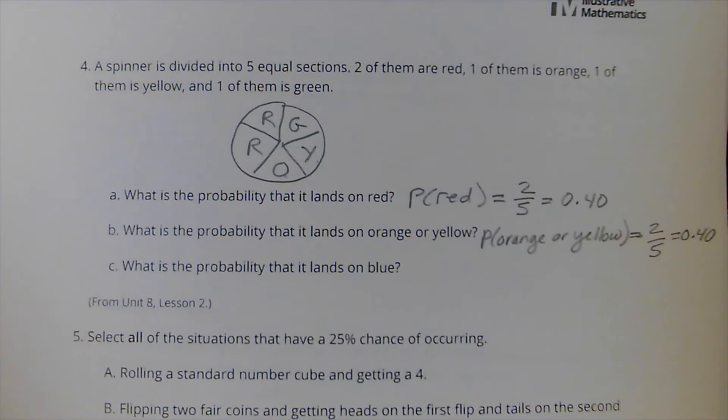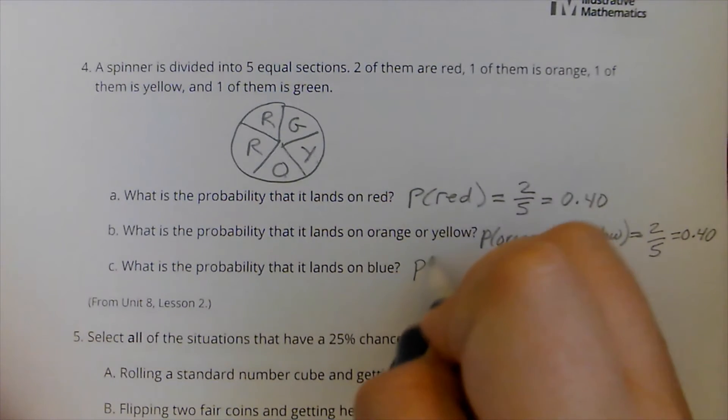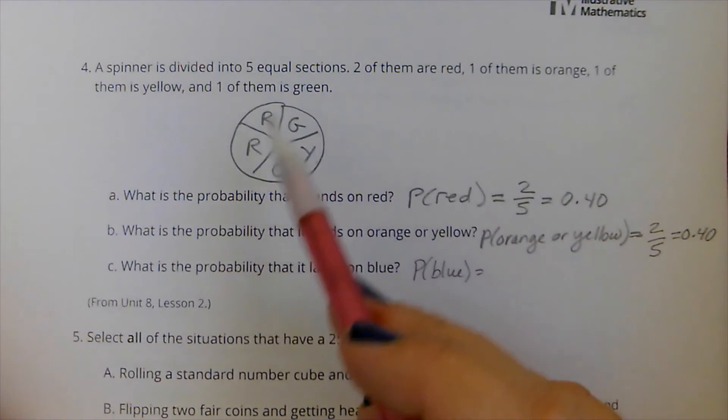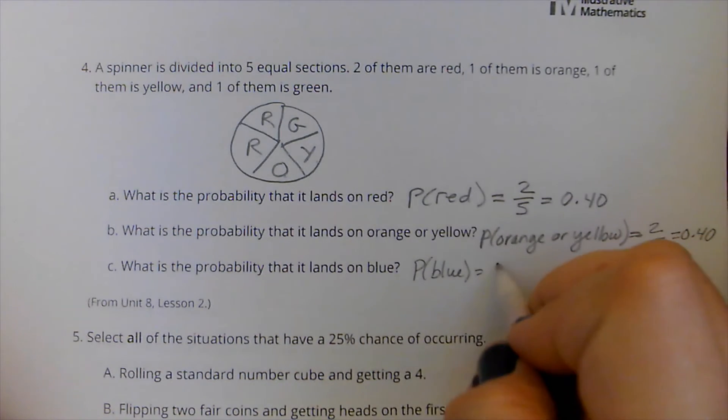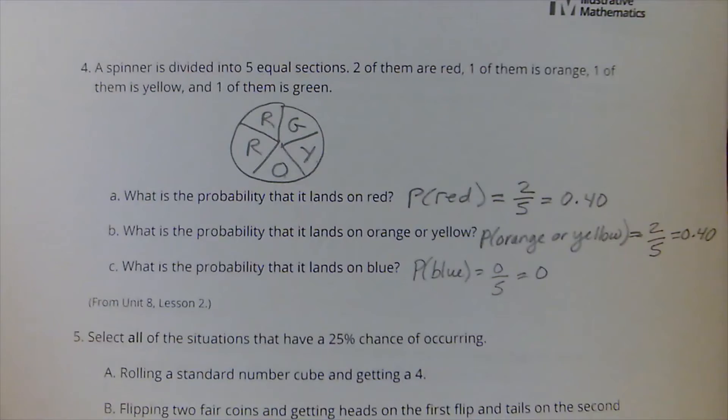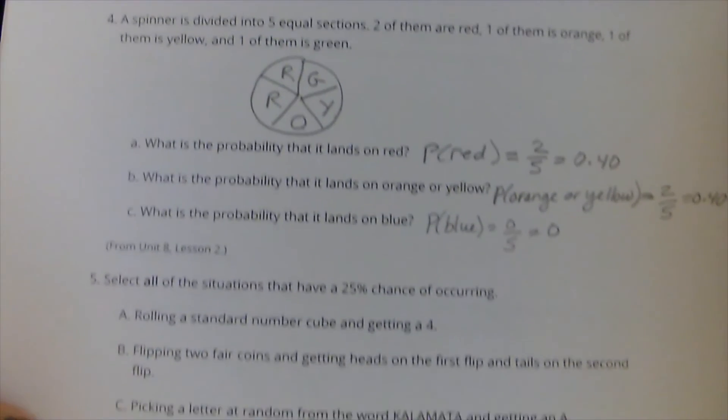What's the probability that it lands on blue? The probability of it landing on blue. So of these five, none of them are blue. So zero out of five, just zero. So it seems like a trick question, but really there is no probability it will land on blue. There's no blue on the spinner.